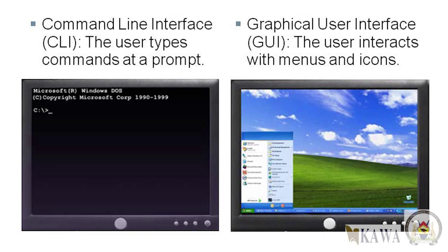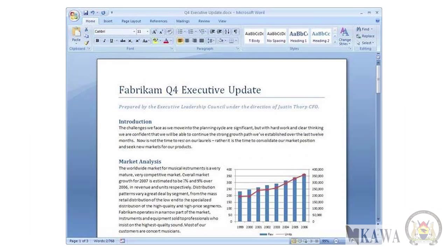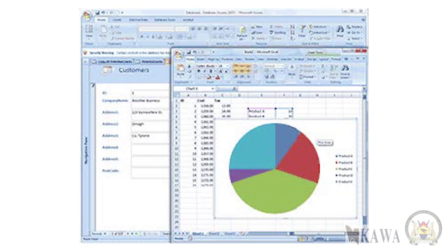The second important part of the computer is the software, also called programs. Software consists of organized sets of instructions for controlling the computer. Some programs exist for the computer itself, to help it manage its own tasks and devices — that's the Windows operating system or any other operating system you're using. Other programs exist for the user and enable the computer to perform tasks for you, such as creating beautiful documents.